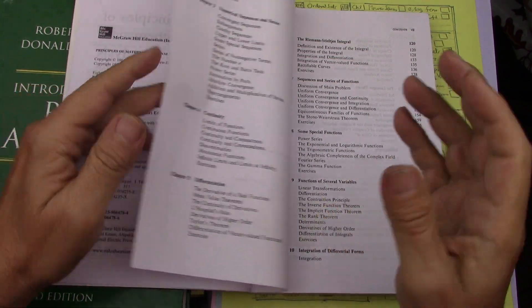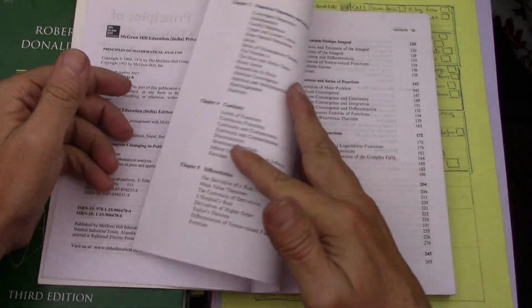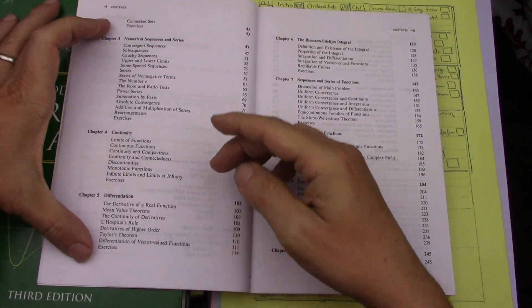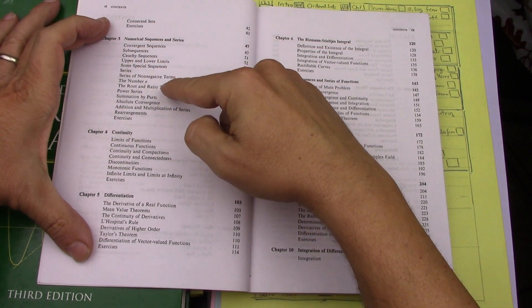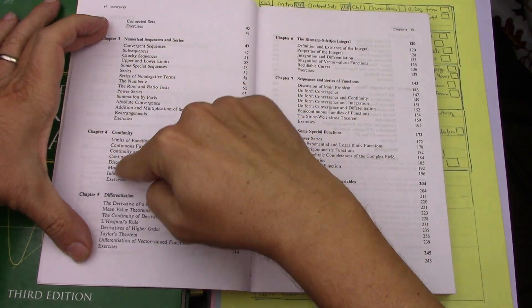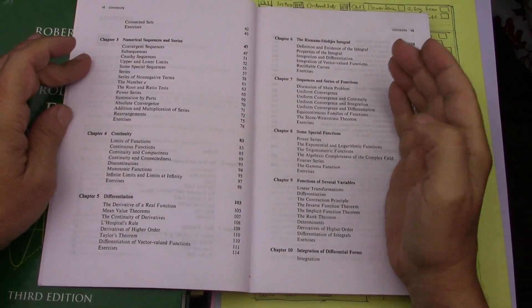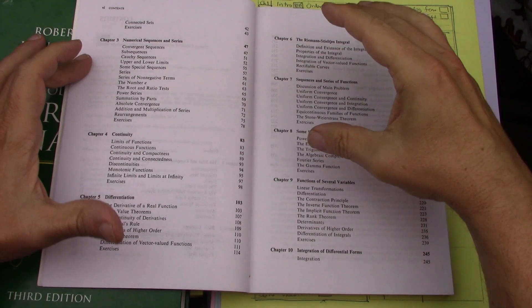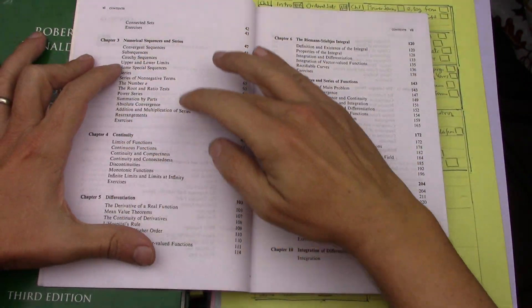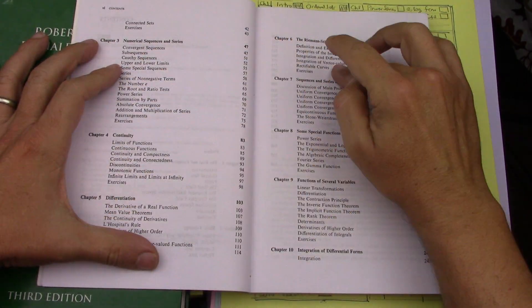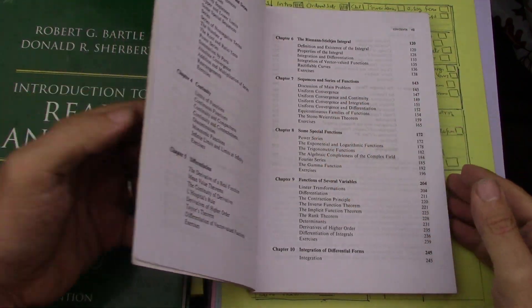Then there's also at least one basic point set topology book that I plan to read, at least one, perhaps there will be a second one. And then once I launch into chapters three, four, five, six, and seven, these five chapters will be done with a few other books which I will read.